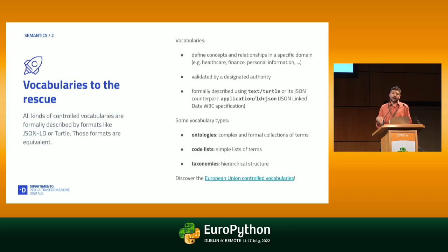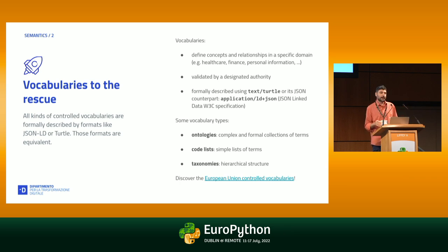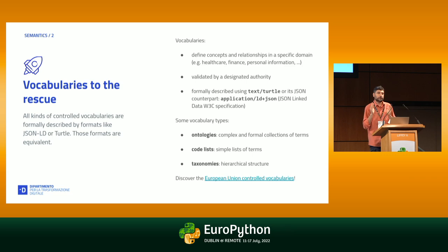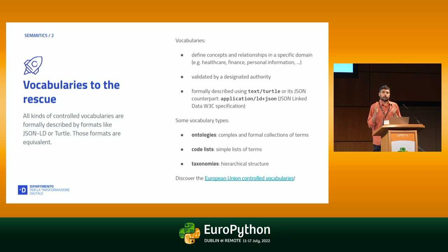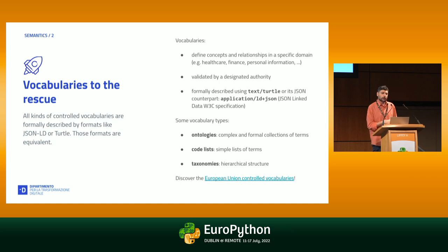Vocabularies contain a collection of terms and define concepts and relationships in a specific domain — for example in healthcare, in finance, whatever. They are validated by a designated authority, which is not necessarily a public authority. For example, your own company could have a vocabulary for defining different job titles, so that hiring managers can use a well-specified job position. They are formally described using the Turtle media type or its JSON counterpart, JSON-LD, which is a W3C specification.